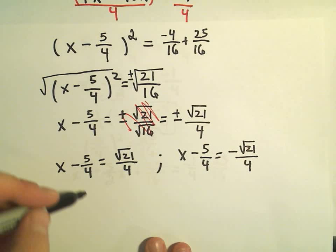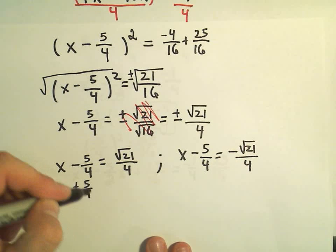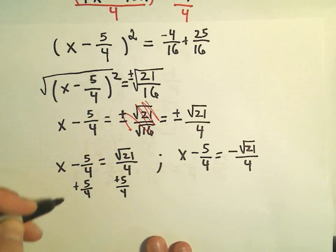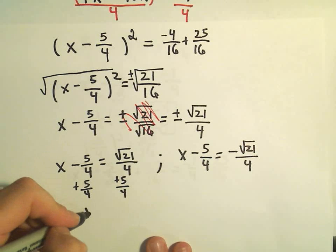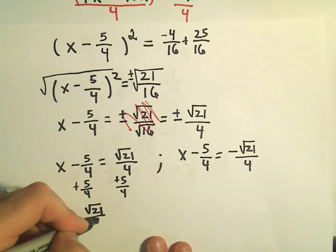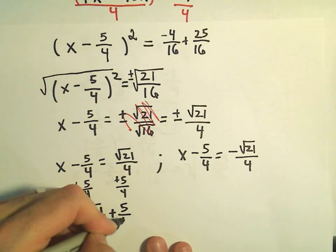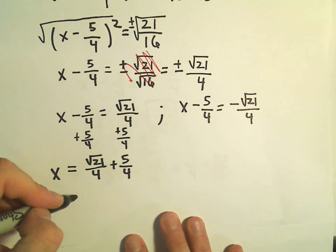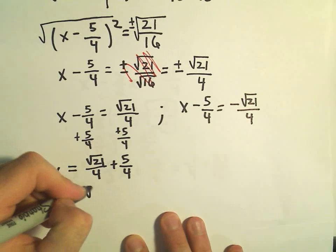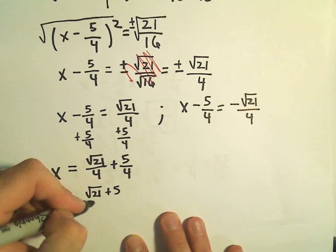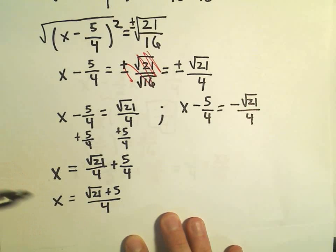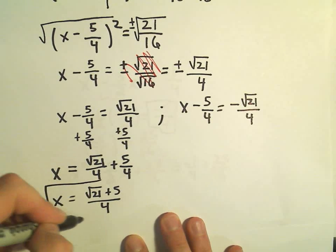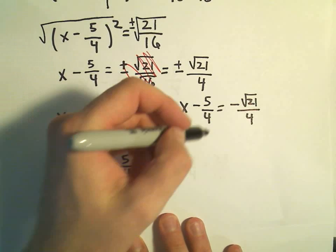In both cases, we're going to add 5/4 to both sides. So in our first equation, we'll get √21/4 + 5/4. And you can either leave it like that or you could write it as a single fraction. √21 + 5 over 4. So that would be one solution to our quadratic equation.